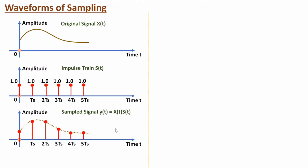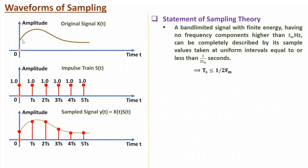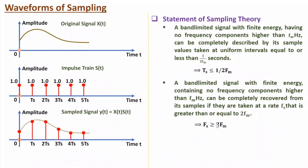Now let me discuss the statement of sampling theory. If the original signal has maximum frequency Fm, then the sampling duration Ts should be less than or equal to 1/(2Fm). This spacing between two samples should be lower than or equal to 1/(2Fm), where 2Fm is the Nyquist rate. In terms of frequency, Fs should be greater than or equal to 2Fm — that is the basic condition for the sampling process.